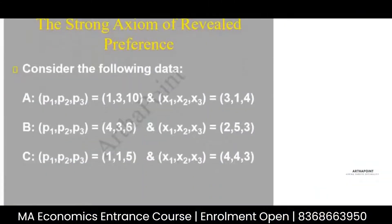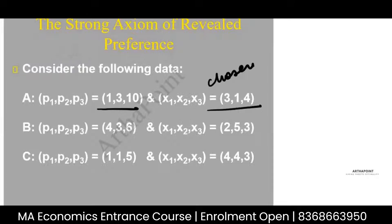Let us consider the following. This is a little complicated. I've introduced three prices here. The prices are 1, 3, and 10 — and this is my chosen bundle. The prices are 4, 3, 6 — and this is my chosen bundle: 1, 1, 5. And this is my chosen bundle.